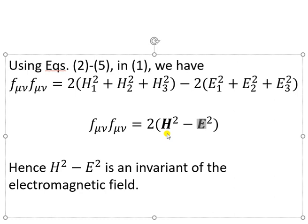We can fold this into component form: H has components H1, H2, H3 and E has components E1, E2, E3. So H1² + H2² + H3² is just H-squared and similarly for E. Therefore F_μν F^μν = 2(H² − E²), and H² − E² is the invariant of the electromagnetic field tensor.